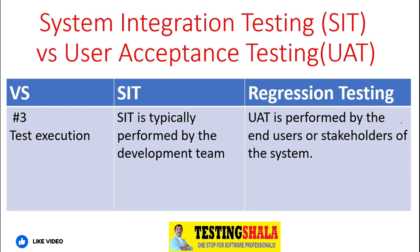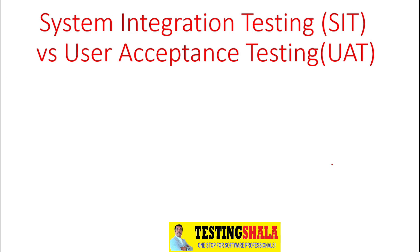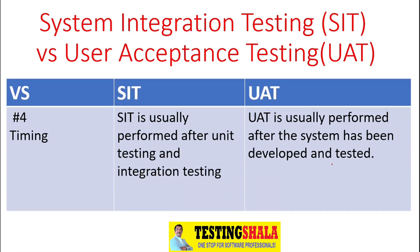The third difference is test execution. SIT is done by the development team — it could be developers or the testing team — whereas UAT is normally done by the end users or stakeholders.